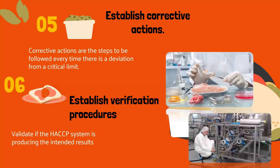Principle number five: establish corrective actions. Corrective actions are the steps to be followed every time there is a deviation from a critical limit. Principle number six: establish verification procedures — validate whether the HACCP system is producing the intended results.